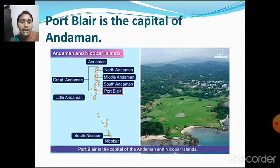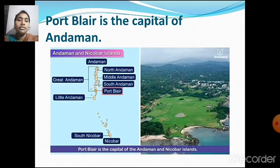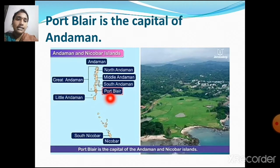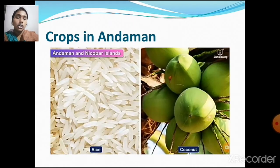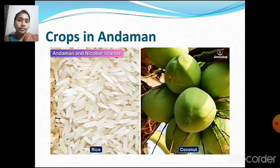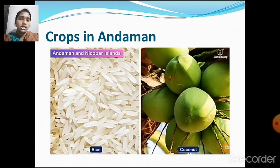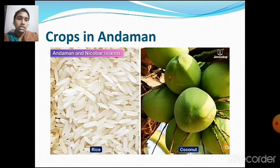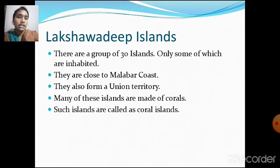Port Blair is the capital of Andaman. The crops that grow in Andaman are rice and coconut.